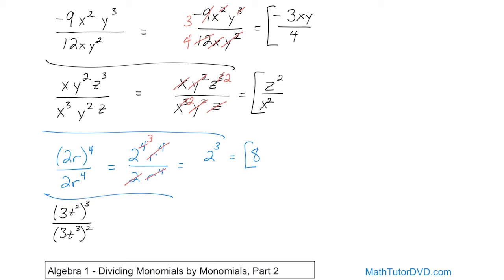The exponent 3 gets applied to each term: 3³ times t⁶ on top, because 3 times 2 is 6. The exponent 2 goes into both on the bottom: 3² times t⁶. Now I can see 3² on the bottom and 3³ on top — both 3s on the bottom cancel, leaving one 3 on top. The t⁶ cancels completely on both sides, so the only thing left is 3. That's the final answer.